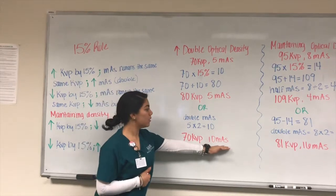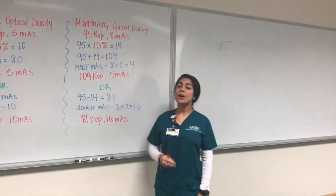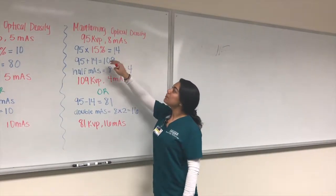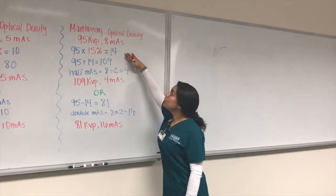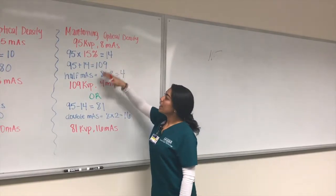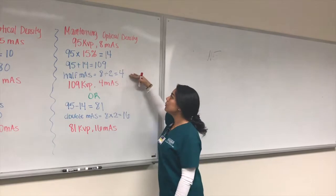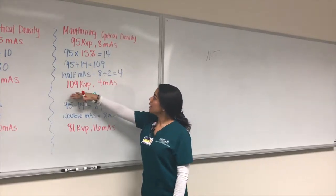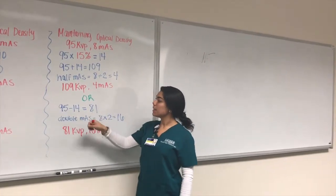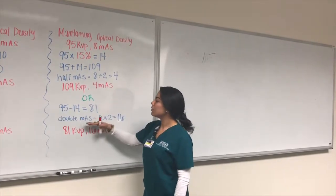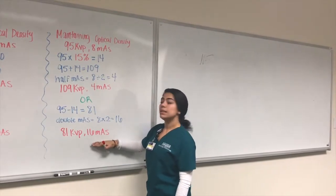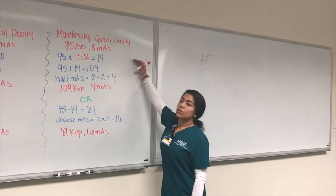To maintain optical density with factors of 95 kVp and 8 mAs: multiply 15% by 95 to get 14, add to 95 for a new kVp of 109, then reduce the mAs by 50% to 4 mAs. Alternatively, subtract 15 from 95 to get 81 kVp and double the mAs to 16. All three combinations — original, 109 kVp / 4 mAs, and 81 kVp / 16 mAs — will give you similar densities.